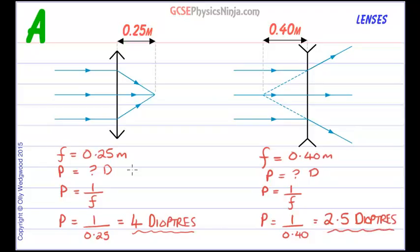And so it's a nice simple approach to this calculation using the power of a lens formula, p equals 1 over the focal length.